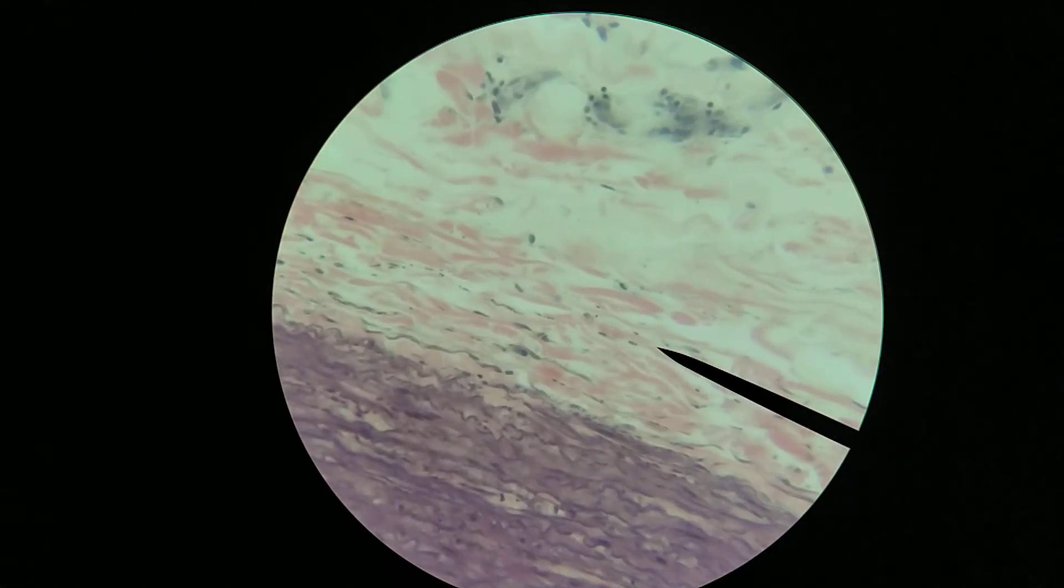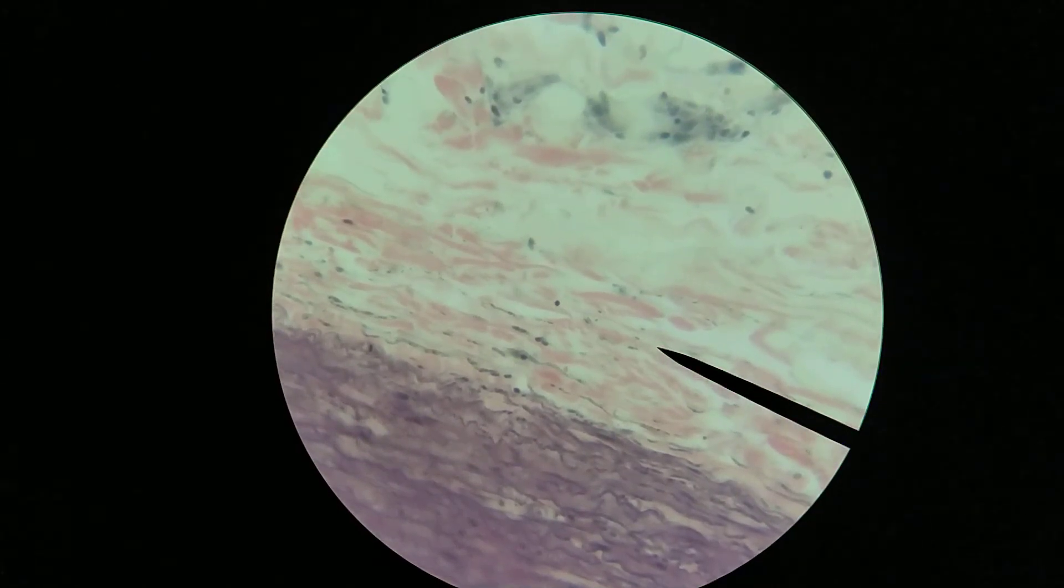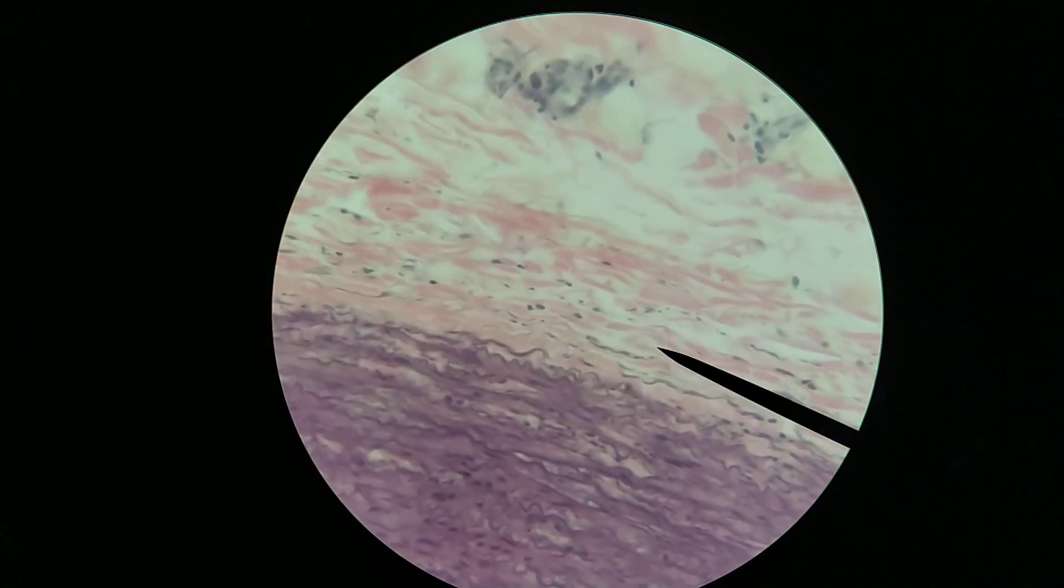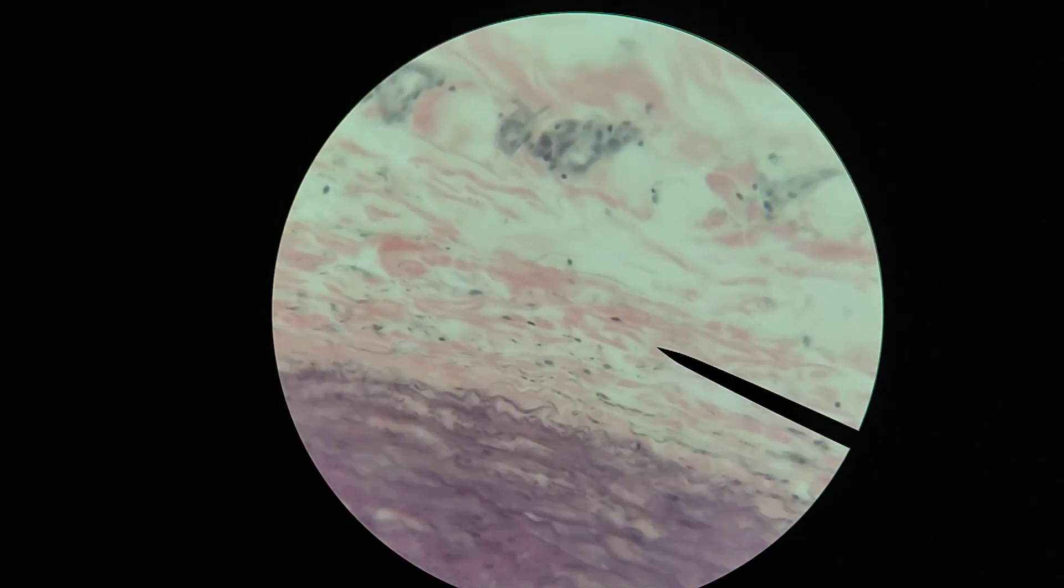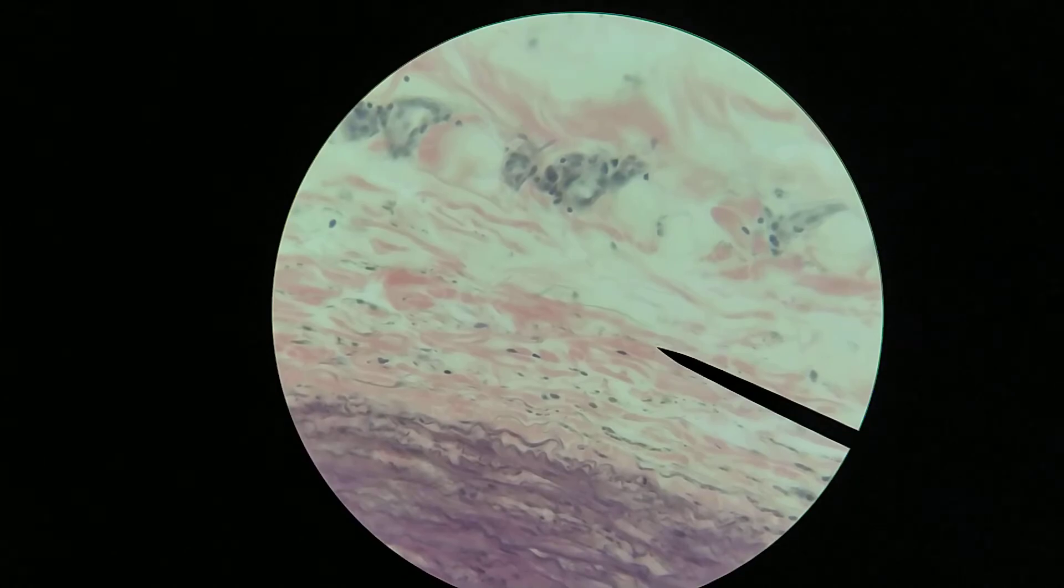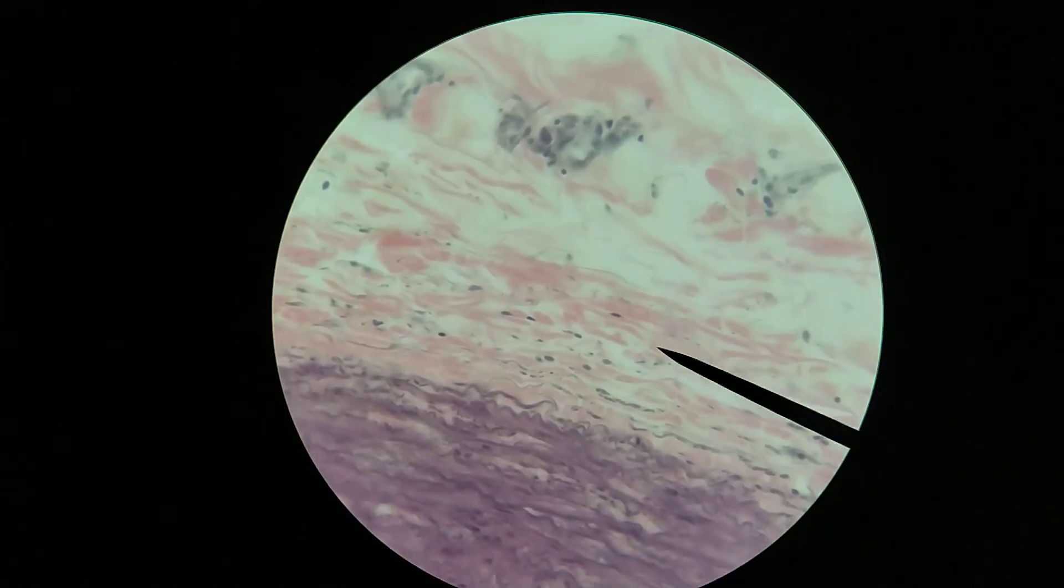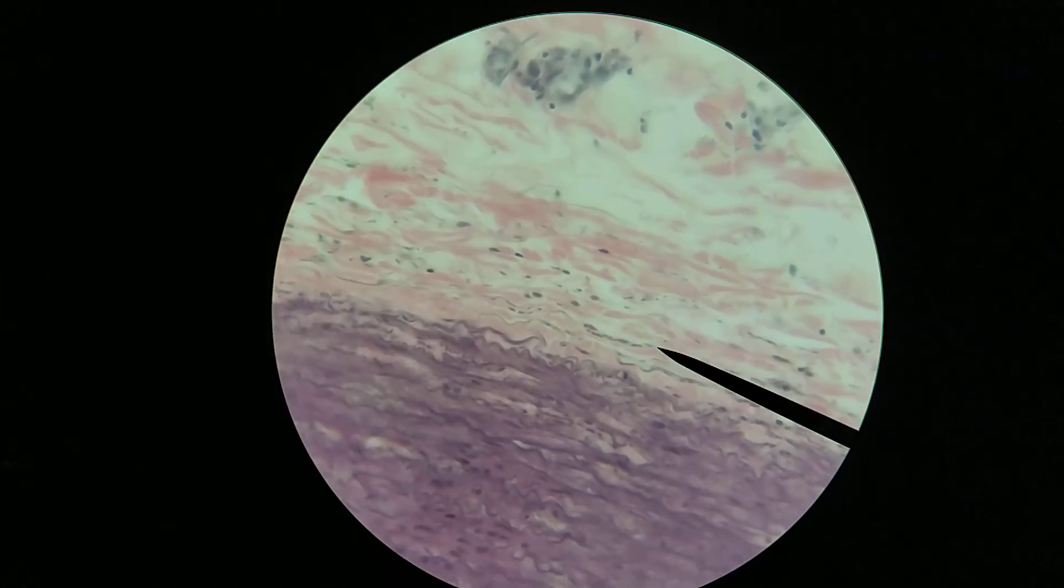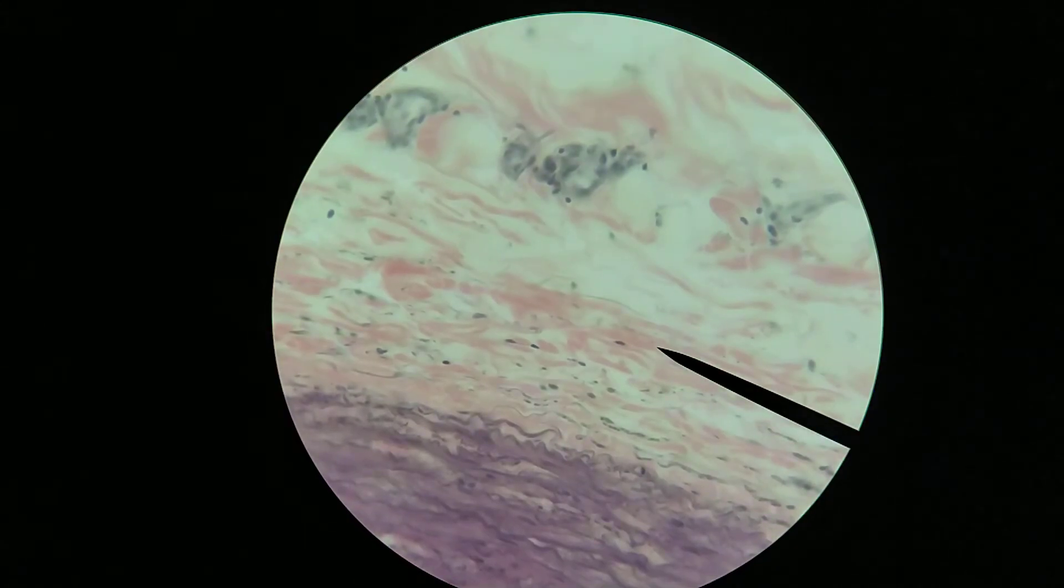And so you can see here, for example, tunica adventitia is a relatively dense irregular connective tissue. You can see the bundles of collagen are quite thick in comparison to the size of the nuclei. And they are going in different directions. So what we have here is a dense irregular connective tissue.